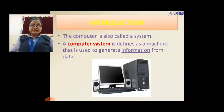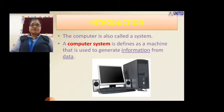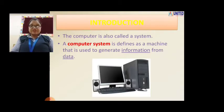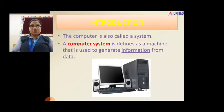The computer is also called a system — a computer system. Why? Because a computer system is defined as a machine. Like at your home there are also so many machines, like a refrigerator or washing machine. Similarly, a computer is a machine, and it is used to generate — that means to make — information from the data.